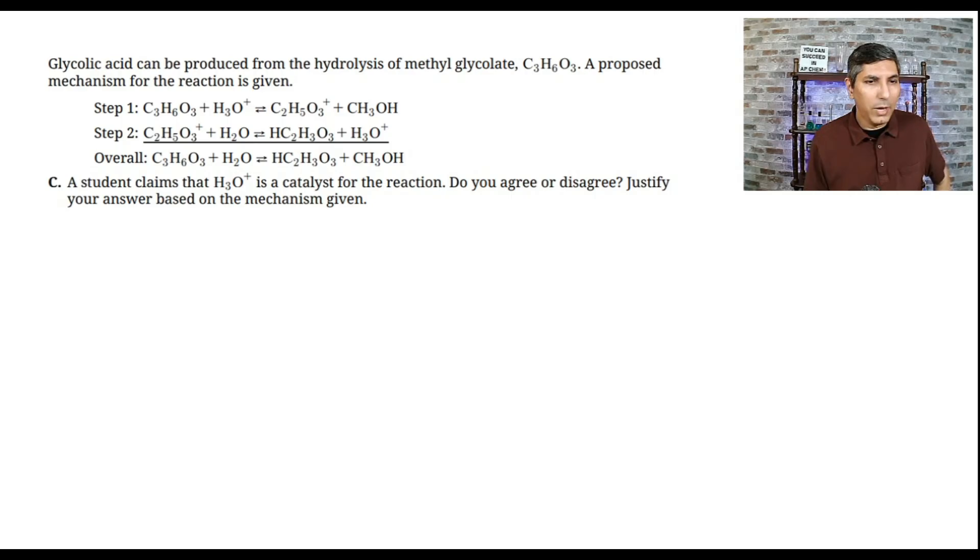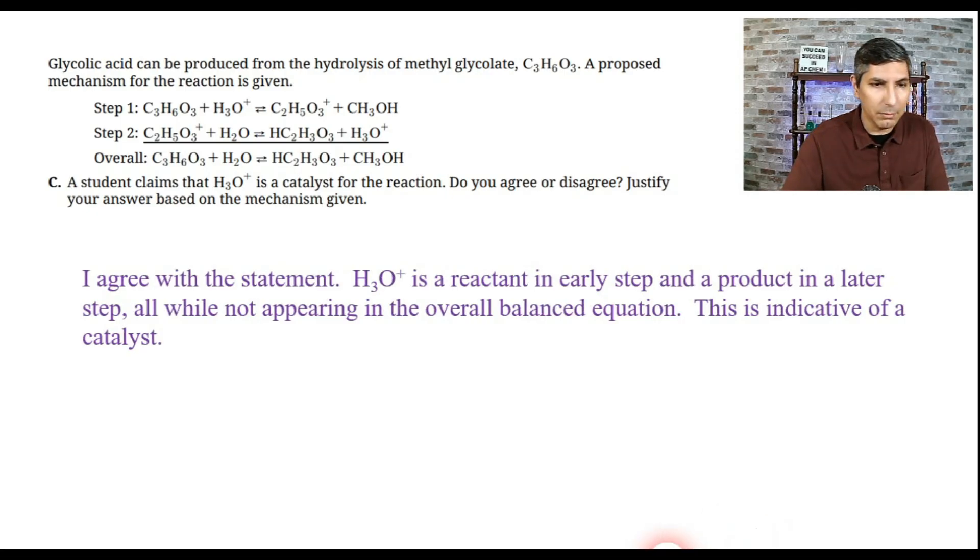The last question says we have a reaction mechanism, that we can produce glycolic acid from the hydrolysis of methylglycolate, and we have a proposed mechanism. A student claims that H3O plus is a catalyst for the reaction. Do you agree or disagree? Justify your answer based on the mechanism given. I would agree with the statement, and the reason is that the H3O plus ion is a reactant in an early step and a product in a later step. As you can see, it gets basically chewed up in step one and then spit out again in step two. That substance, H3O plus, does not appear in the overall balanced equation. All of this is indicative of the fact that H3O plus is a catalyst. If you answer that correctly with a good explanation, give yourself a point for question number 7c on the 2025 AP Chemistry exam.